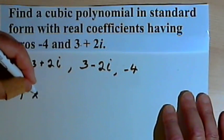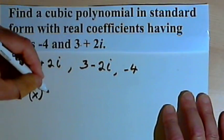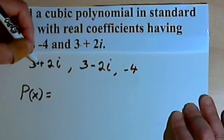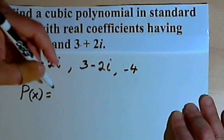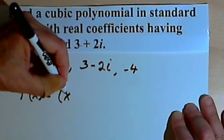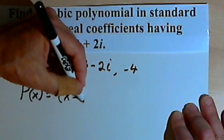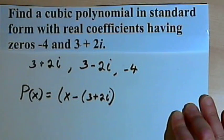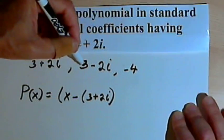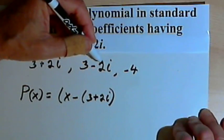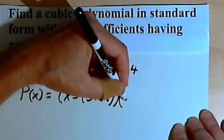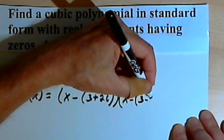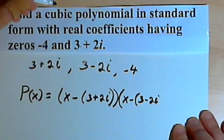I'm going to call this P of x. And if we've got 3 plus 2i as a zero, then that means that x minus open parenthesis 3 plus 2i close parenthesis is going to be a factor.